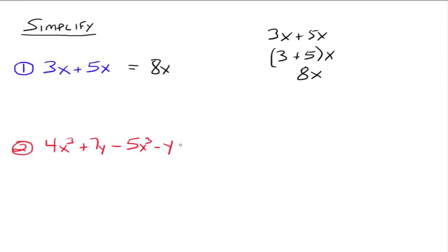For example 2: 4x cubed and negative 5x cubed are like terms — 4 minus 5 gives negative 1, so negative x cubed. Then positive 7y and negative y are like terms: 7y minus y gives 6y. Can we add negative x cubed and 6y together? No, because they are not like terms. So negative x cubed plus 6y is as far as we can simplify. Being able to combine like terms is important for simplifying expressions and solving equations later.